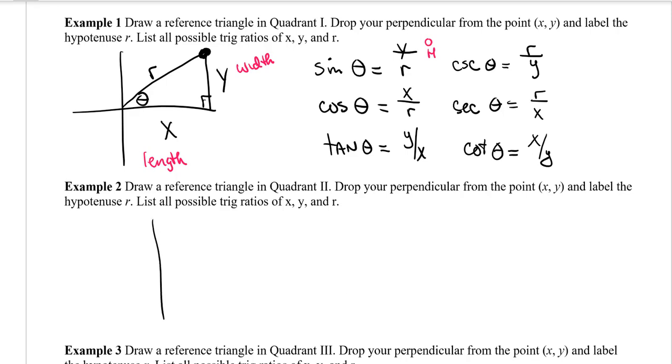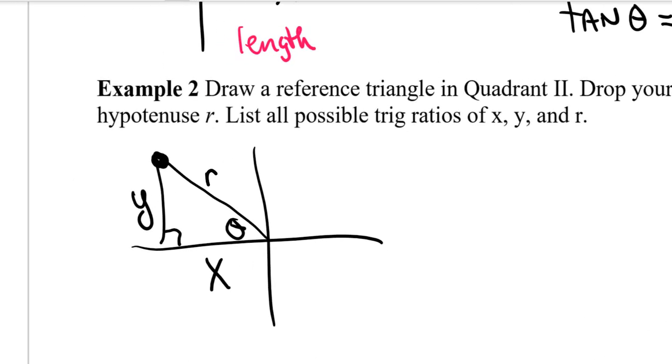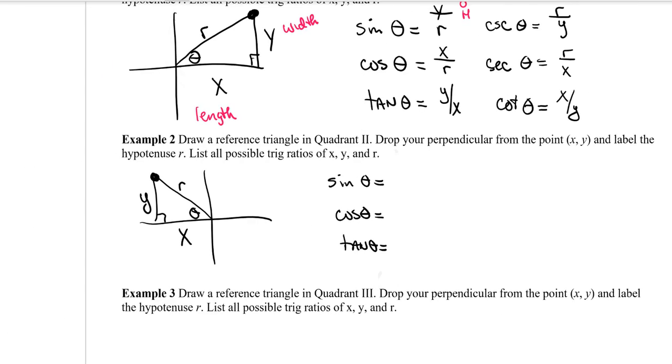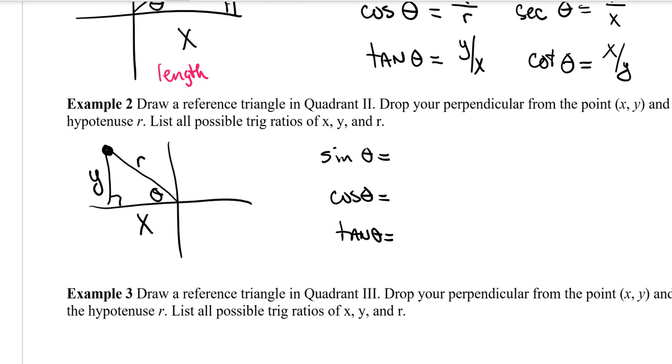So we're going to do the same thing. Quadrant number two is where we're going to have our point (x, y), so theta will be right there. Our point is going to be up here, and then we know the x is on this side, the y is in this spot, and then the radius is always going to be r. So based on that, what I want you to do is do the same thing. Sine of theta is going to be some ratio, cosine of theta is going to be a ratio, and so is tangent of theta. And then once you have those three sorted out, then go ahead and do the reciprocals: cosecant of theta, secant of theta, and cotangent of theta.